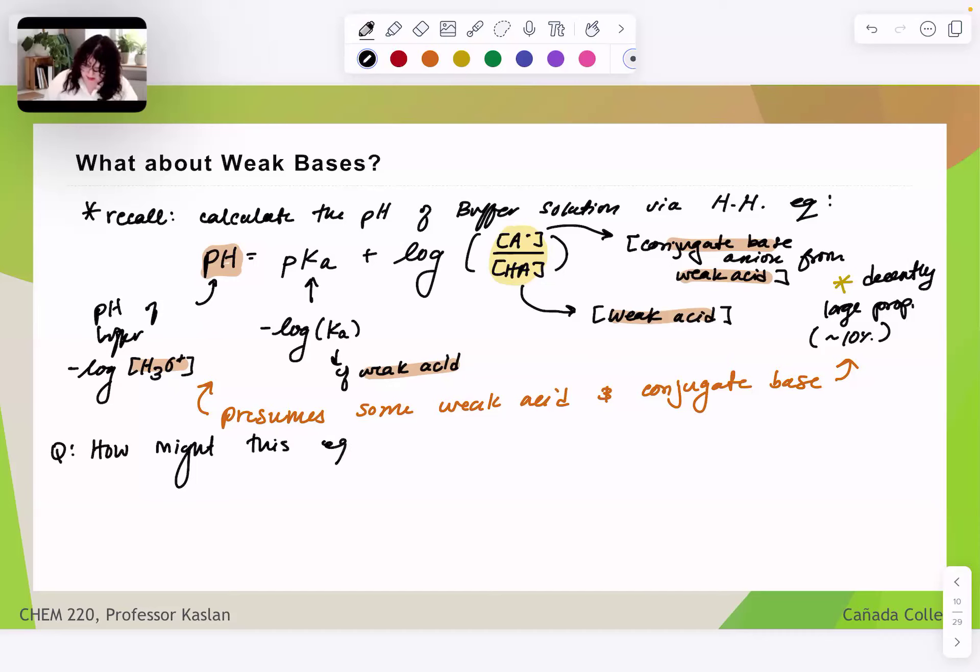So let's ask ourselves a question. How might this equation change if we were looking at a buffer solution of a weak base B and its conjugate acid, BH+. So the Henderson-Hasselbalch equation will have the same structure for a weak base as it does for a weak acid buffer.